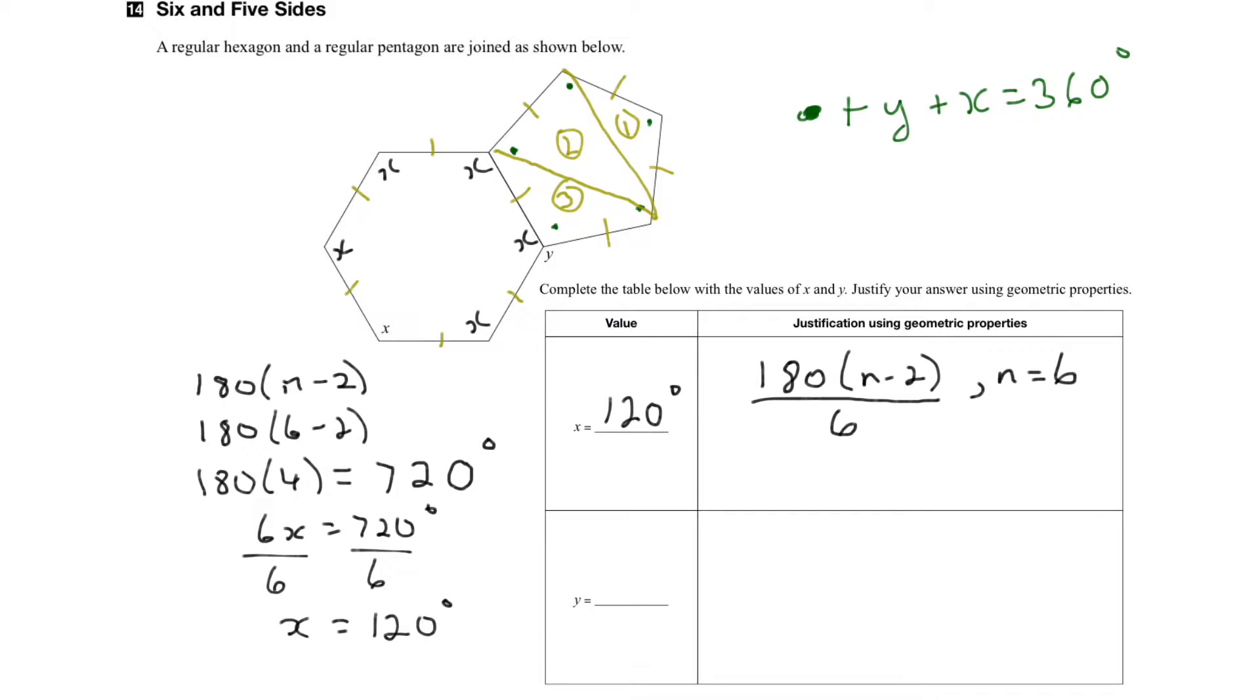Now we know that each of the triangle has a sum of 180 degrees. So what I can say is that there are 3 times 180 degrees available to me as the sum of the interior angles of this particular shape.